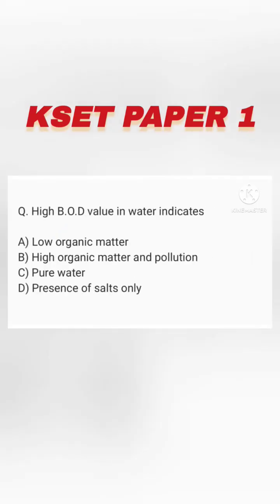High BOD value in water indicates. Options are: low organic matter, high organic matter and pollution, pure water, presence of salts only. Option B, high organic matter and pollution, is right.